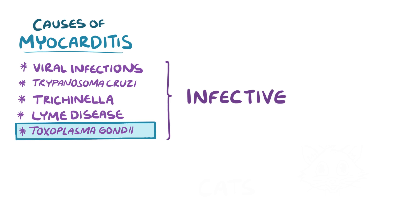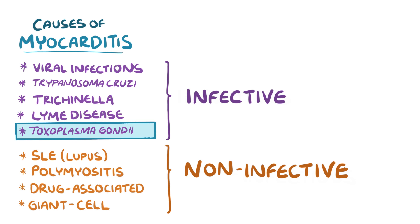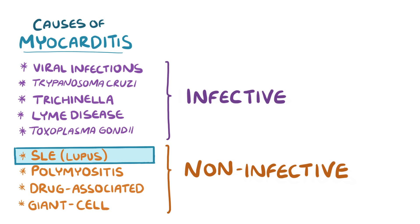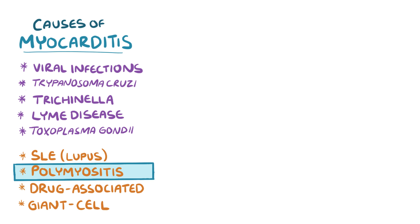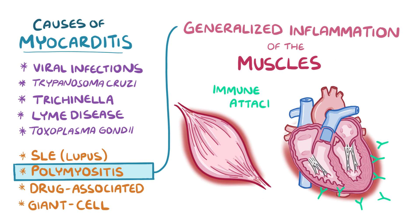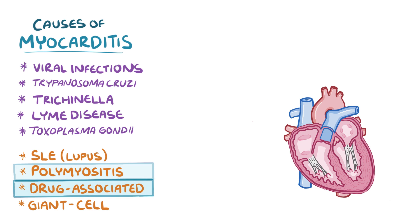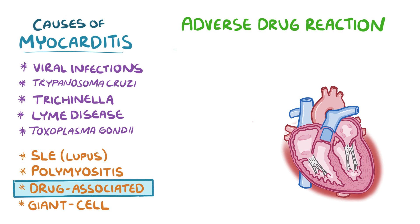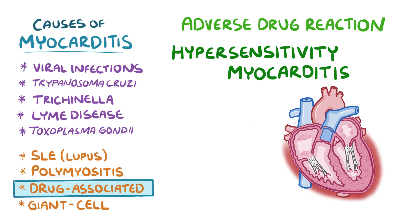In immunocompromised individuals, Toxoplasma gondii — a single-celled parasite harbored by cats — can also cause myocarditis. There are also non-infectious causes, including systemic lupus erythematosus (lupus) and polymyositis, a generalized inflammation of the muscles where the immune system attacks the myocardial layer. There's also drug-associated myocarditis, an adverse drug reaction that inflames the heart, causing hypersensitivity myocarditis.